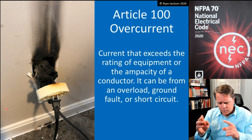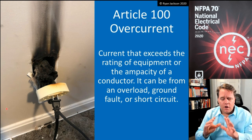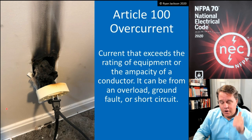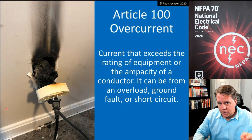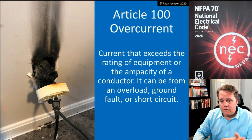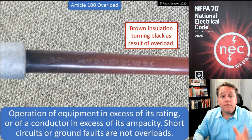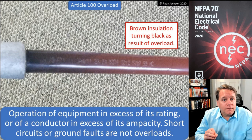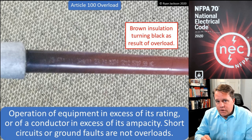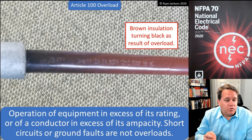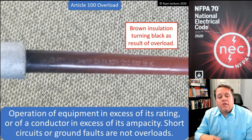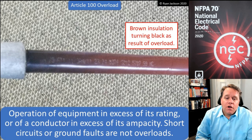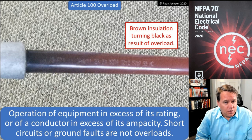So overcurrent is current in excess of the conductor's ampacity or the equipment's rating, resulting from an overload, ground fault, or short circuit. Now, an overload is defined in Article 100 as operation of equipment in excess of its rating or operation of a conductor in excess of its ampacity. Short circuits and ground faults are not overloads.